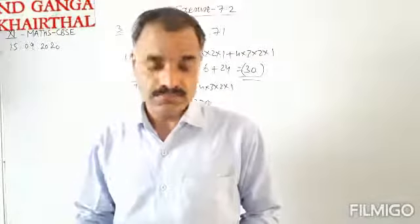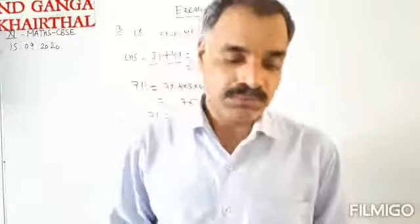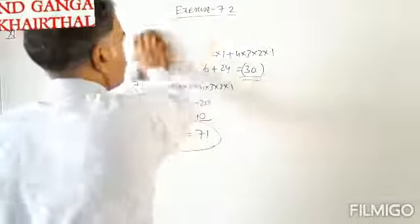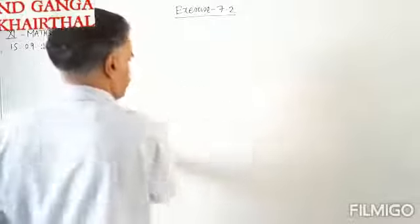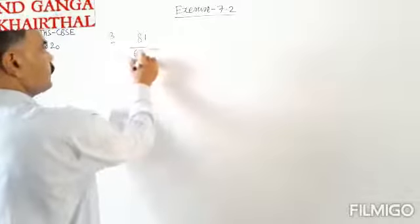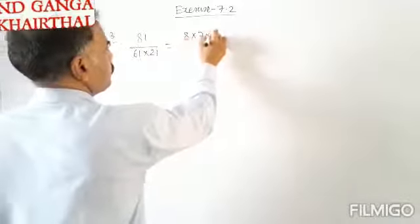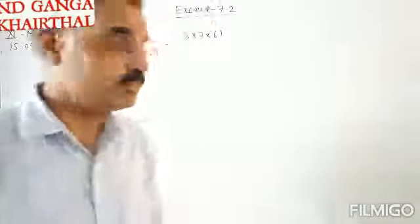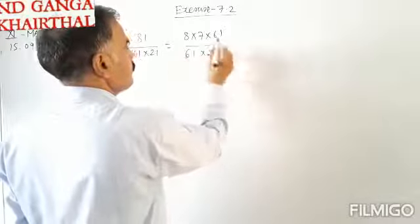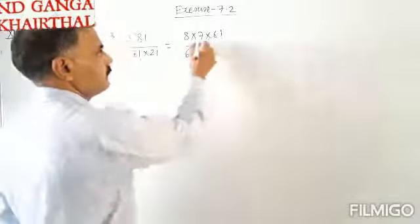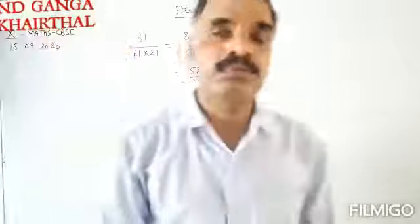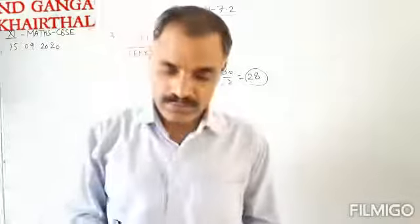Question number 3: Evaluate factorial 8 upon factorial 6 into factorial 2. Factorial 8 can be expanded up to 6 factorial: that is 8 into 7 into 6 factorial, all divided by 6 factorial into 2 factorial. The 6 factorial cancels, leaving 56 upon 2 factorial, that is 56 upon 2, which equals 28. So factorial 8 upon factorial 6 into factorial 2 equals 28.